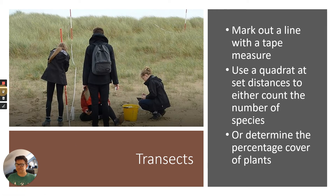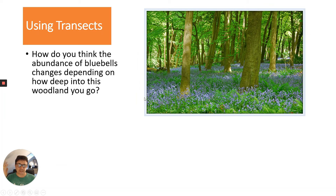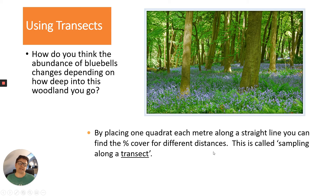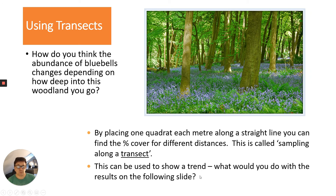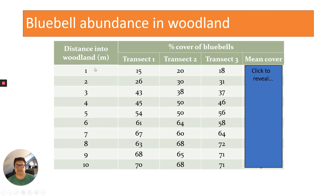Here's a specific example: a transect from grassland into a bluebell woodland, looking at the abundance of bluebells from the edge into the woodland. We place one quadrat at each metre along a straight line and find the percentage cover of bluebells at different distances. This should show a trend, and we'd also measure abiotic factors alongside.